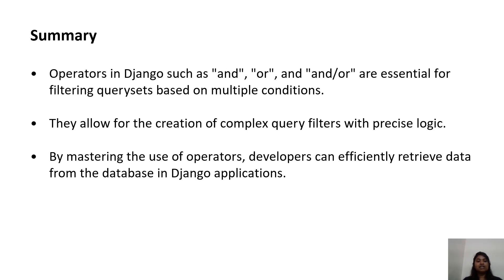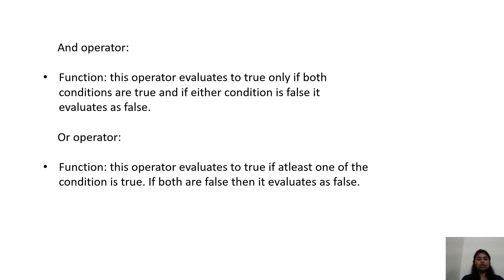Summary: Operators in Django such as AND, OR, and AND/OR are essential for filtering query sets based on multiple conditions. They allow for the creation of complex query filters with precise logic. By mastering the use of operators, developers can efficiently retrieve data from the database in Django applications. The AND operator evaluates to true only if both conditions are true; if either condition is false, it evaluates as false. If both are false, it also evaluates as false.